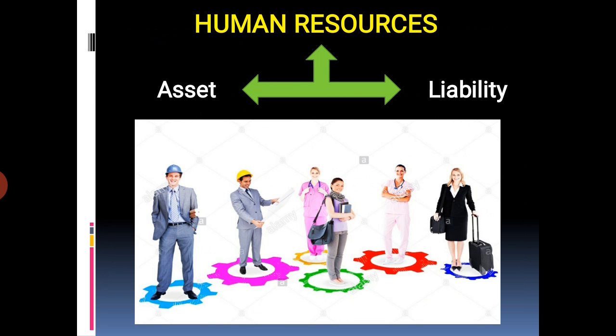Human resource has two most important features: asset and liability. First, asset — a person or thing that is useful to something or somebody. Another, liability — the state of being responsible for something. A liability is something a person or company owes, usually a sum of money. Liability includes loan, account payable, bonds, warranties, etc.